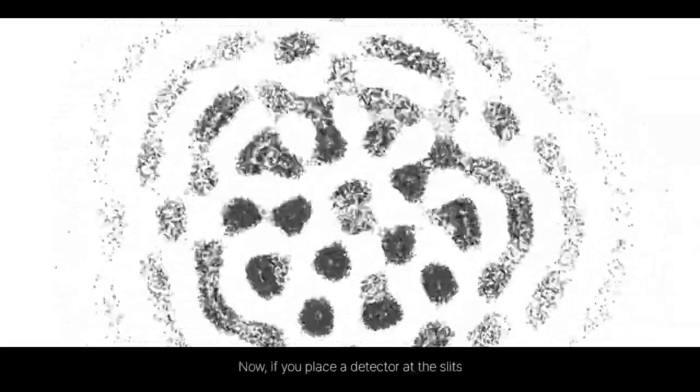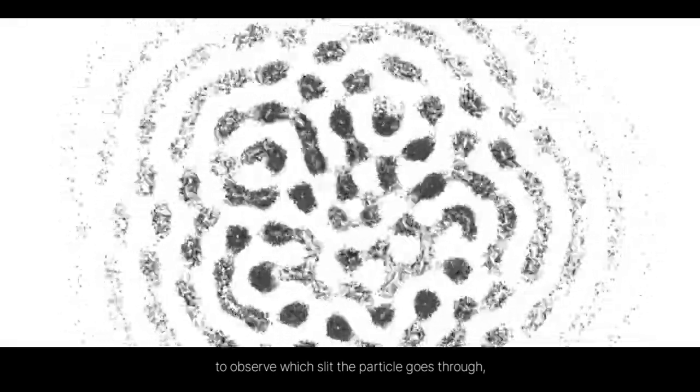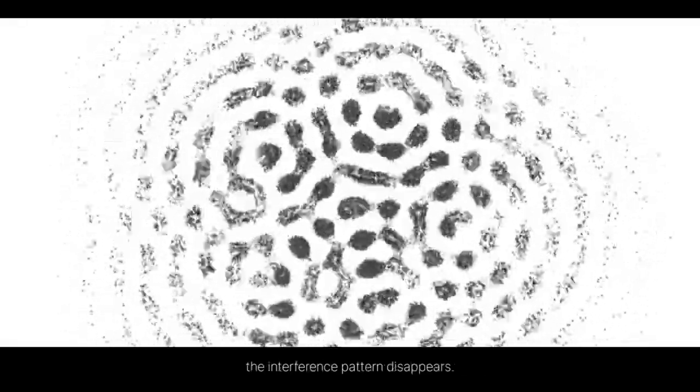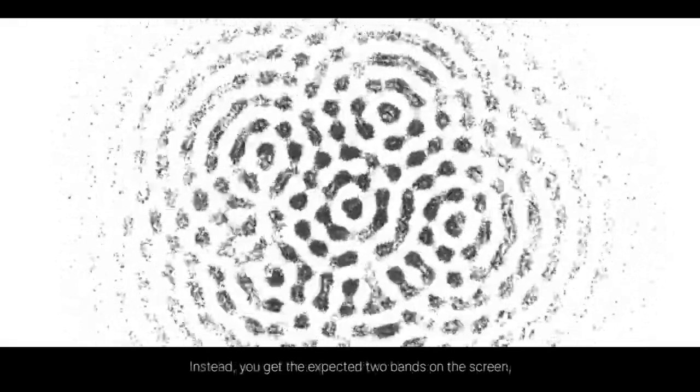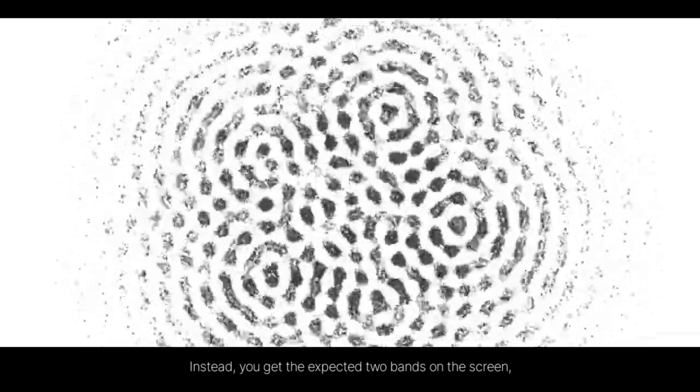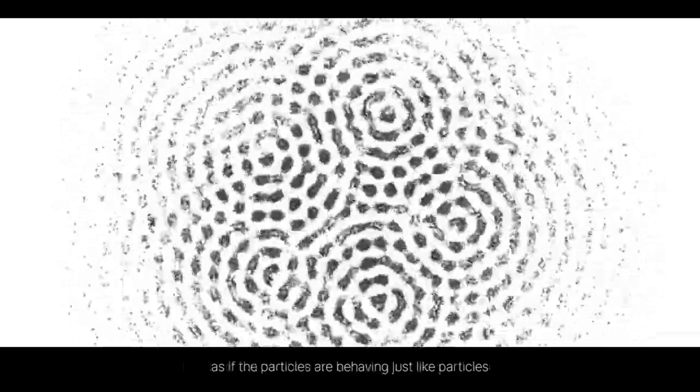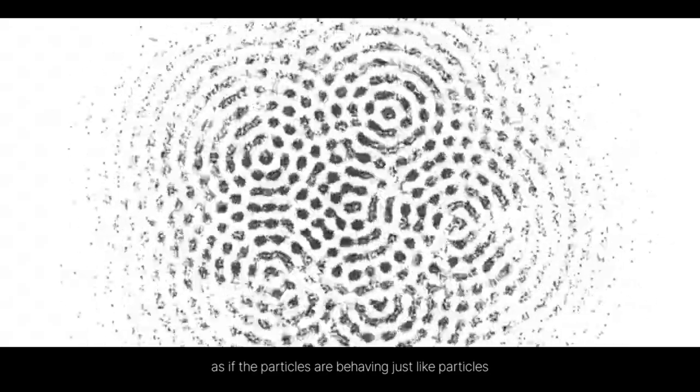Now, if you place a detector at the slits to observe which slit the particle goes through, the interference pattern disappears. Instead, you get the expected two bands on the screen, as if the particles are behaving just like particles and not waves.